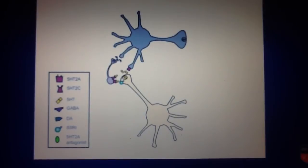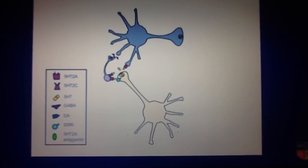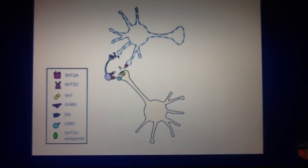Likewise, direct binding of serotonin at 5-HT2A receptors on dopamine neurons also inhibits dopamine release.